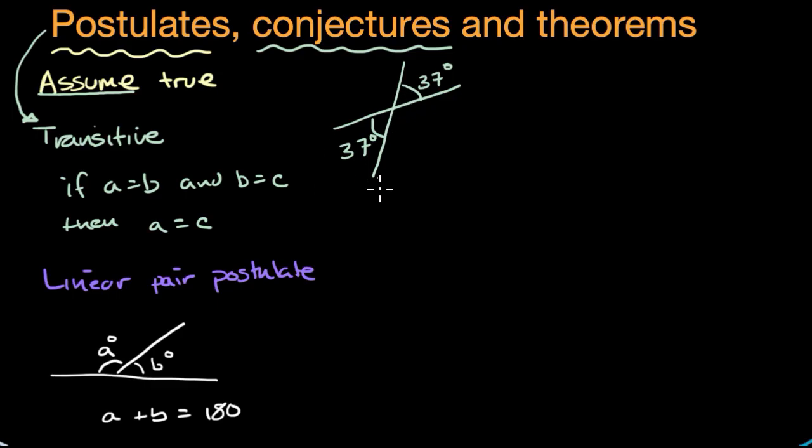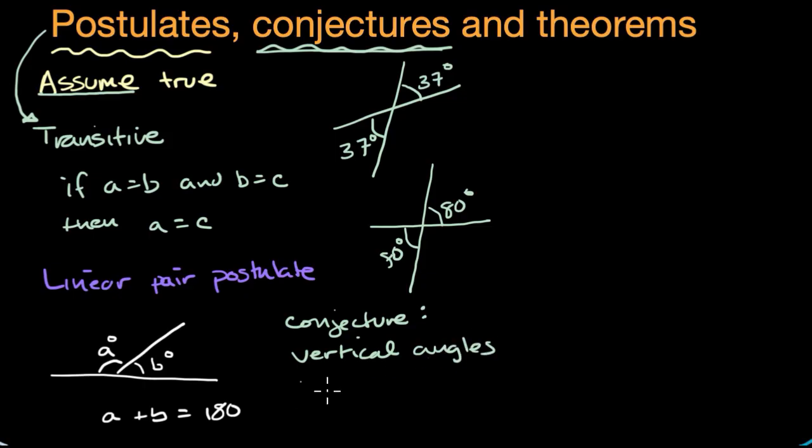It just happened to be the two that I chose? But let's say that you do it with two different lines. So let's say you look at these two right over here, and you measure this angle is 80 degrees, and this one is also 80 degrees. So then you might start forming a conjecture right over here. Let me write this down. The conjecture would be: I keep seeing that vertical angles, every time I measure them, they seem to be the same. So maybe your conjecture is that vertical angles are congruent.